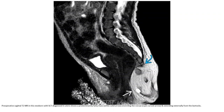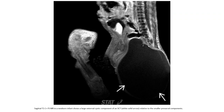This is a T2 MRI in a newborn with sacrococcygeal teratoma diagnosed in utero, showing a predominantly fatty mass with internal calcifications. A T1C+ fat-suppressed image in a newborn infant demonstrates a lipomatous component of the sacrococcygeal teratoma, related to the smaller presacral component.